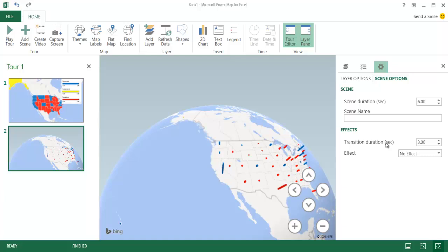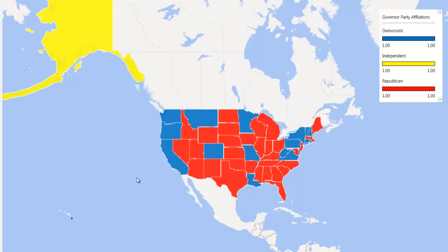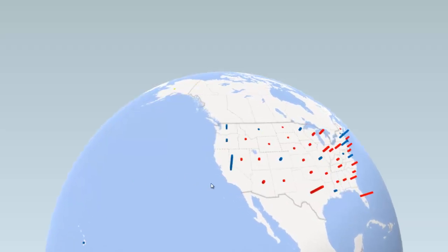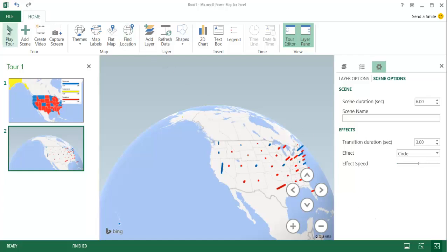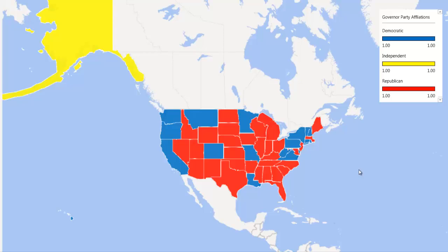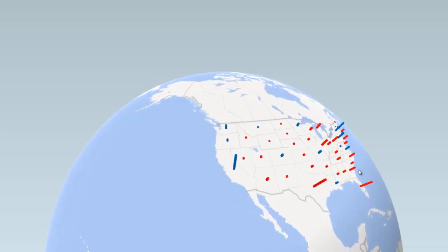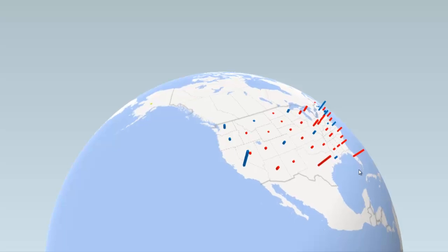I'll click Play with no effect — it stays on the map for four seconds, then turns into the globe for the last scene with columns. Now let me go back and add an effect. I'll add a circle effect. Clicking play again: we have our scene with the different states for four seconds, then it turns into a globe and flies over a little bit — you can see it's done a little effect there.